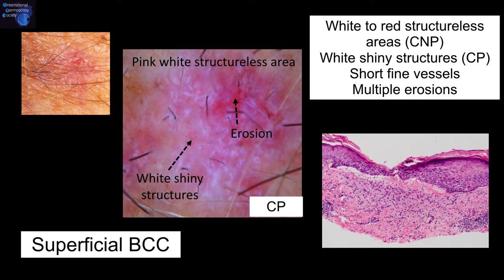Another superficial basal cell carcinoma in the contact polarized mode. Again, the pink-white structural areas, the white shiny structures often in the form of blotches and strands, and an erosion.